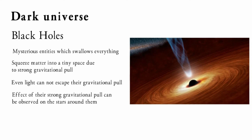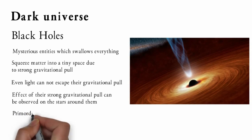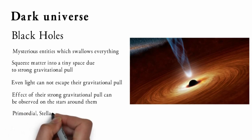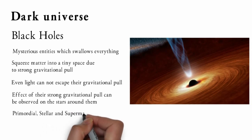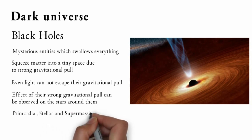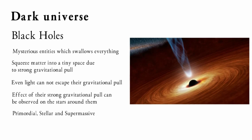Black holes can be of three types depending on their mass. Smaller black holes are called primordial, medium-sized black holes are called stellar and are about 20 times the mass of the Sun, whereas larger black holes are called supermassive and are about 1 million times the mass of the Sun. There are supermassive black holes at the center of almost all galaxies.